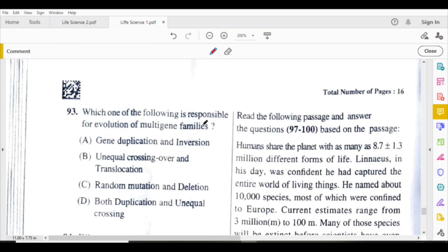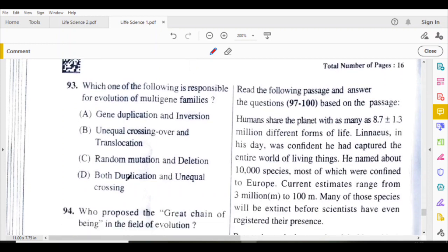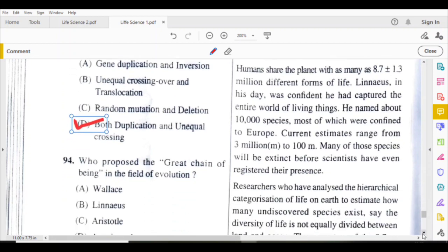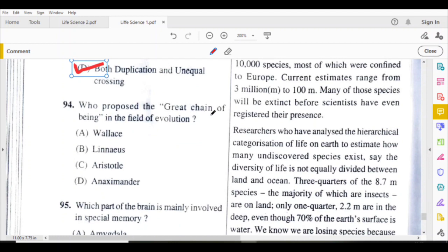Which of the following is responsible for evolution of multi-gene families? Both duplication and unequal crossing over. Who proposed the great chain of being in the field of evolution? Aristotle.